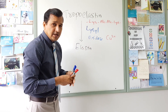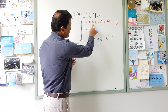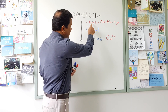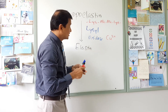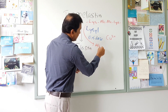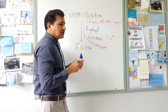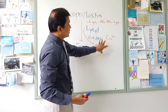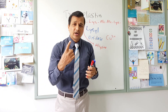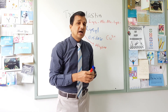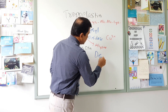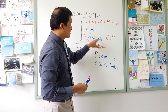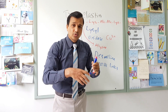What lysyl oxidase does is cause oxidative deamination of these lysine residues into allysin residues. Three allysin molecules in each of the tropoelastin chains — three allysin residues will combine with one lysine residue within the polypeptide chain, and that will form what is called desmosine crosslinks.